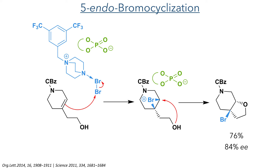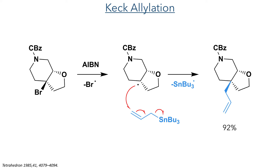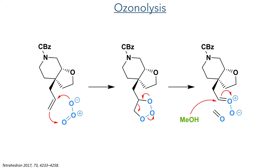Taking this bromide forward, they then performed a Keck allylation. This reaction used AIBN as a radical initiator, which abstracts a bromine radical and leaves a radical on the tertiary carbon centre, which then attacks allyltributylstannane. This causes expulsion of the tributyltin radical and produced the desired allyl compound in 92% yield with complete retention of stereochemistry. This allyl group was then reacted with ozone to carry out an ozonolysis reaction.